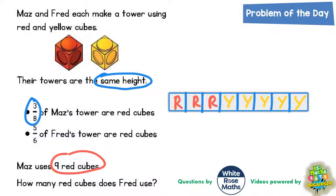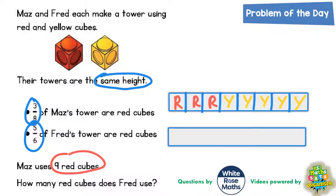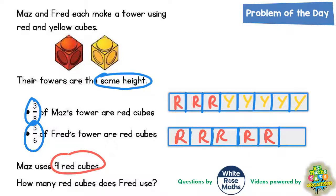Now it says 5 sixths of Fred's tower are red cubes, so here comes the bar model for Fred's tower. His bar is talking about 5 sixths, so we need to split his bar into six pieces. Split it in half first and then split each half into three, and then we will have six pieces. 5 out of six pieces - 5 sixths - are red, which means the other 1 sixth must be yellow.